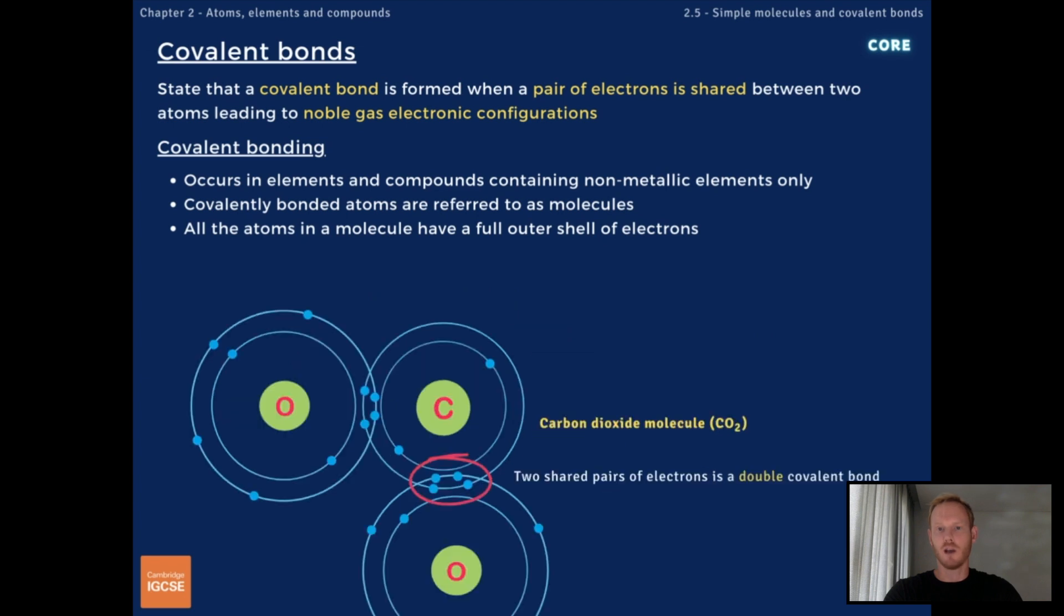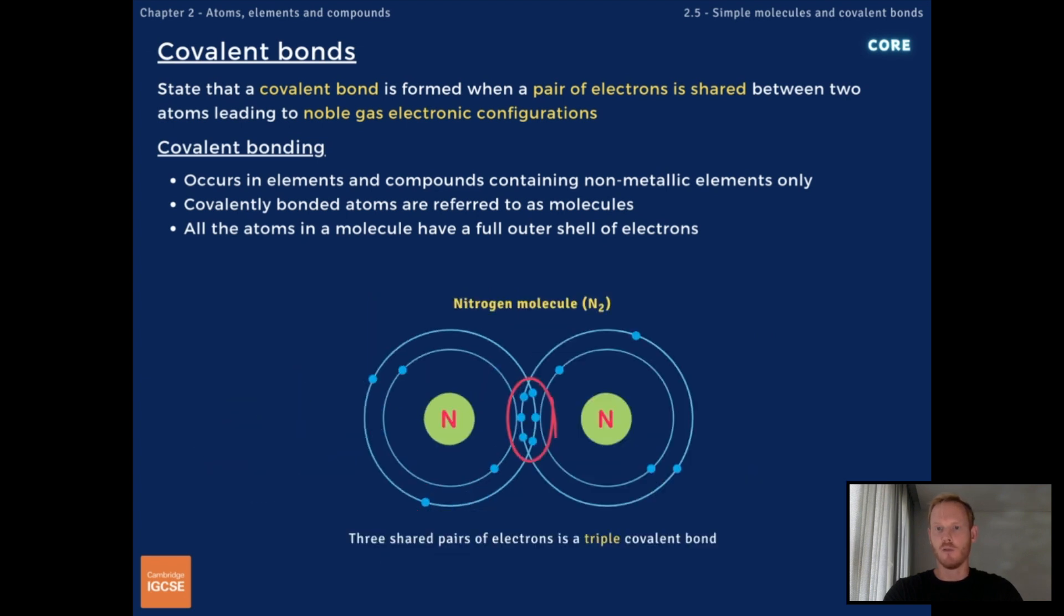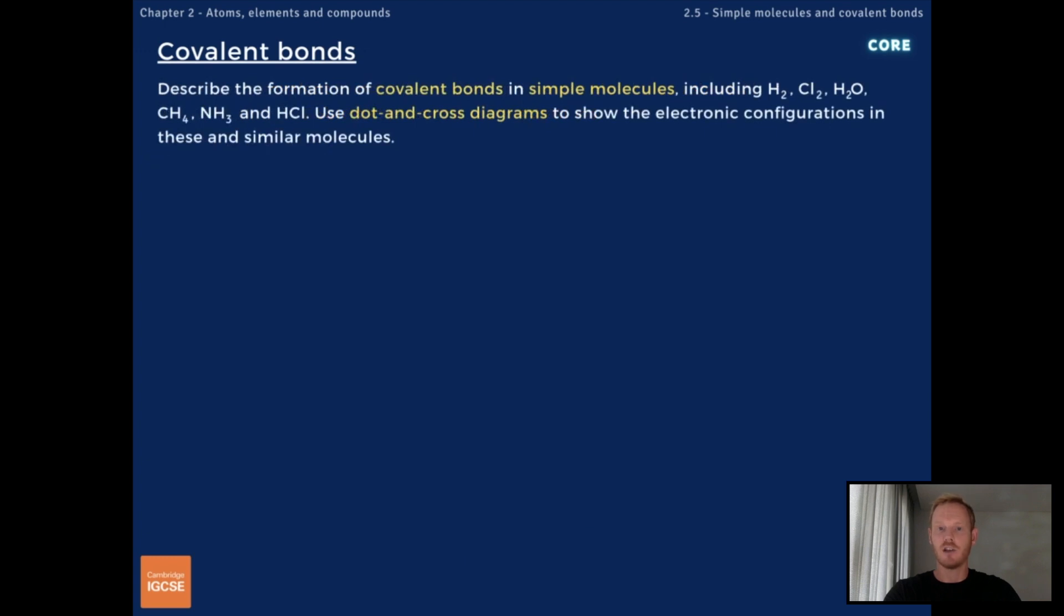Covalent bonds can be single, double, or triple, depending on the number of electrons that are shared. Covalent bonding only occurs in elements and compounds containing non-metallic elements. Next, you need to describe the formation of covalent bonds in simple molecules using dot and cross diagrams.